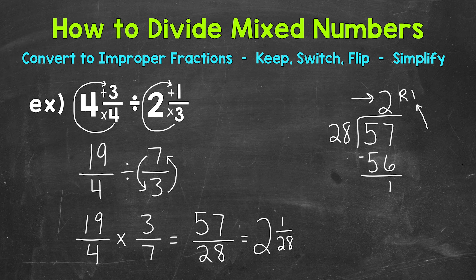Once we get to our mixed number, we can check to see if we can simplify the fractional part. 1 28 is in simplest form. The only common factor between 1 and 28 is 1. So we are done. 2 and 1 28.